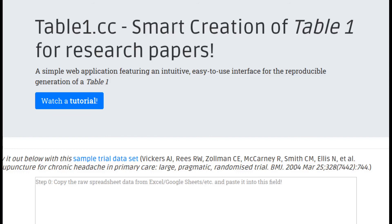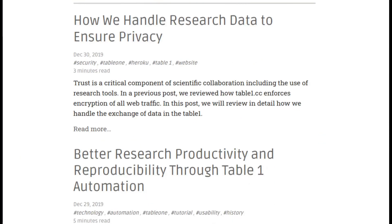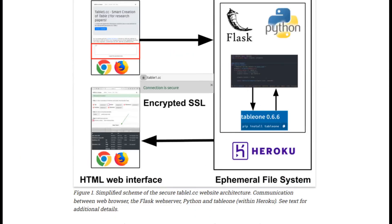In case you're curious how this works, go back to the Table 1 website — we have a blog where you can read about how it works. Your selections are translated into Python code, and then it uses the TableOne Python module, which is sent back. All of that is encrypted, so you can always feel confident.